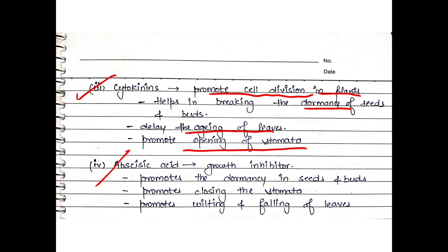Next is Abscisic Acid. Abscisic Acid is a growth inhibitor. It stops growth and promotes dormancy in seeds and buds. This promotes closing of stomata and promotes wilting and falling of leaves. Yellow leaves are promoted by abscisic acid.